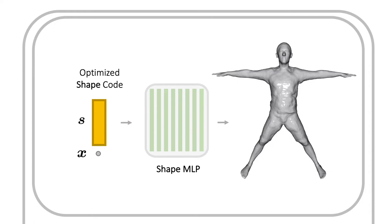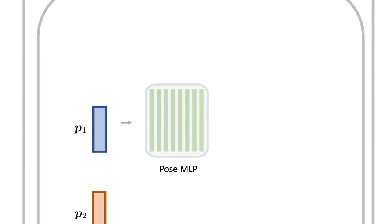Finally, we deform the reconstructed canonical mesh into every N frame in the input sequence, by querying the deformation vector for every vertex in the canonical shape.